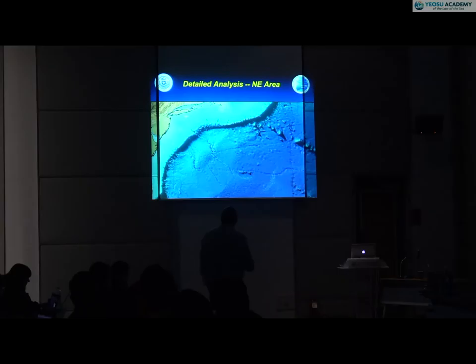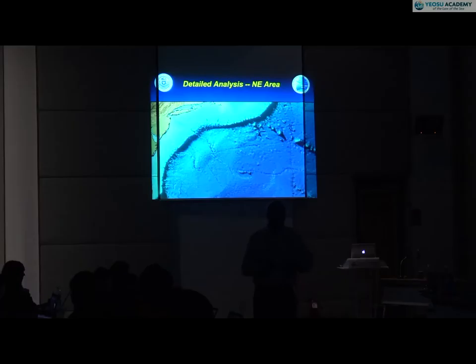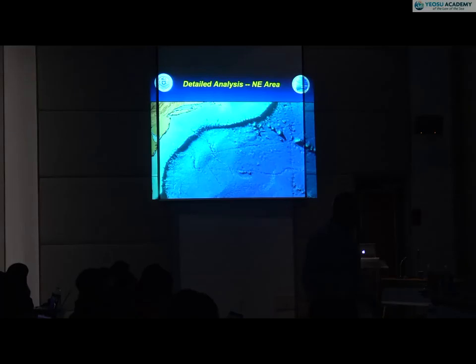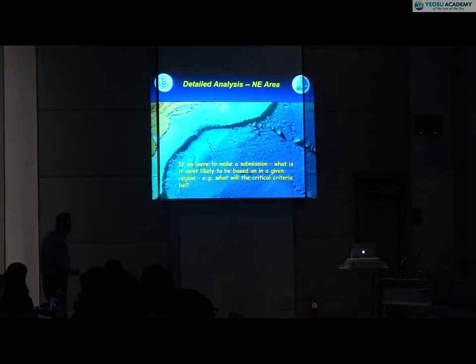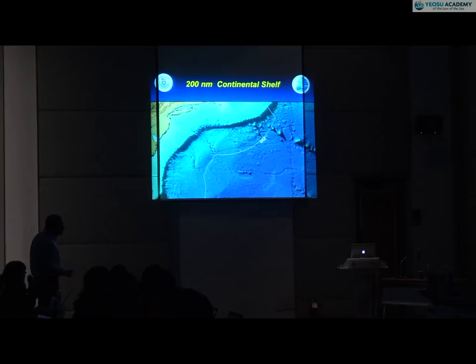For each potential area, we asked: if we were going to make a submission to this area, what would we need to demonstrate? I'll use the Northern Atlantic Margin as an example. We use satellite-derived bathymetry not as part of the submission but to look at the general morphology — the general shape of the seafloor — and get an idea of what's there. On top of that, we superimpose real data to see where existing data exists and where there are gaps.